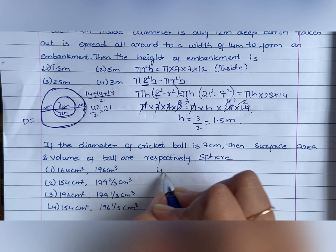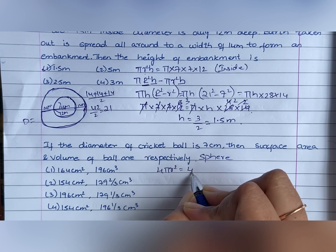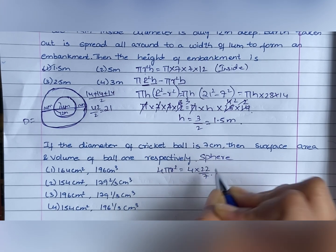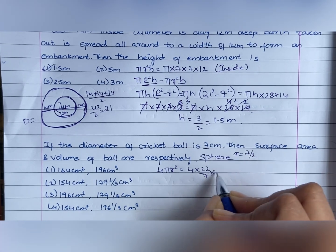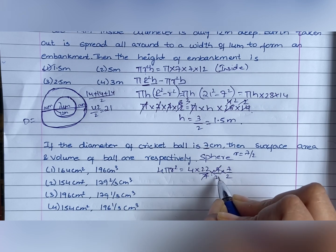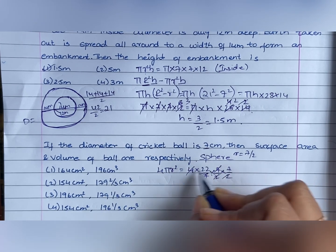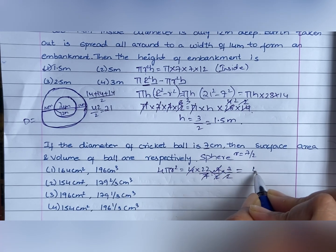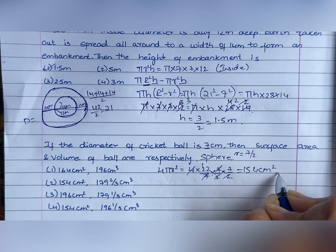Surface area is 4 pi r square. That is 4 into 22 by 7 into, diameter is 7 so radius is 7 by 2. So, 7 by 2 into 7 by 2. 7, 7 cancel. 2 into 2, 4 cancel. So, 7 is 14, 7 is 14, 154 centimeter square is the surface area.